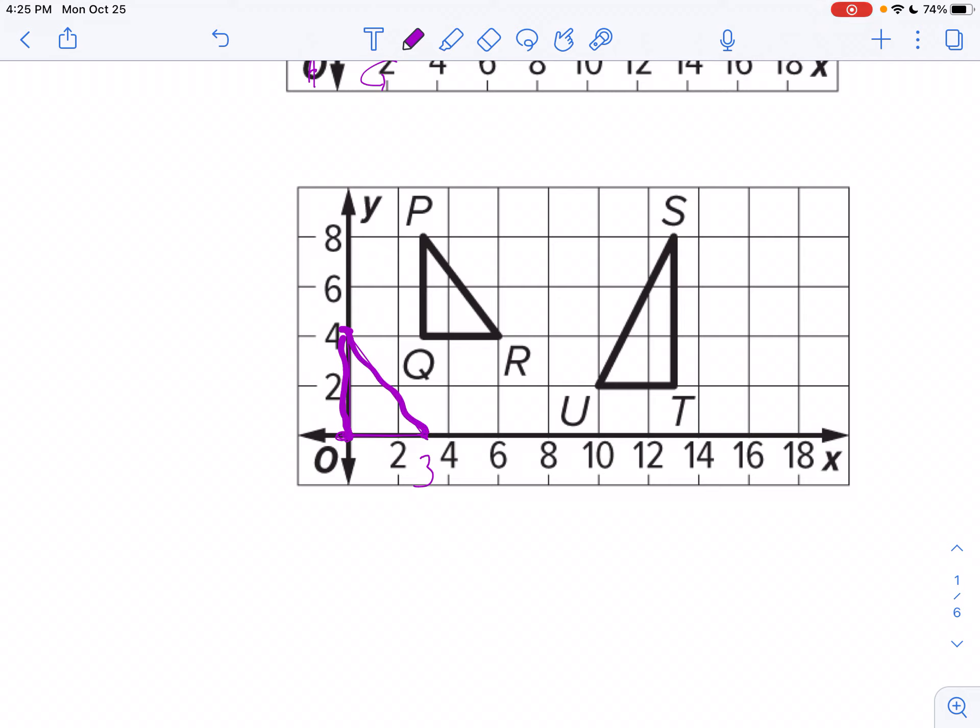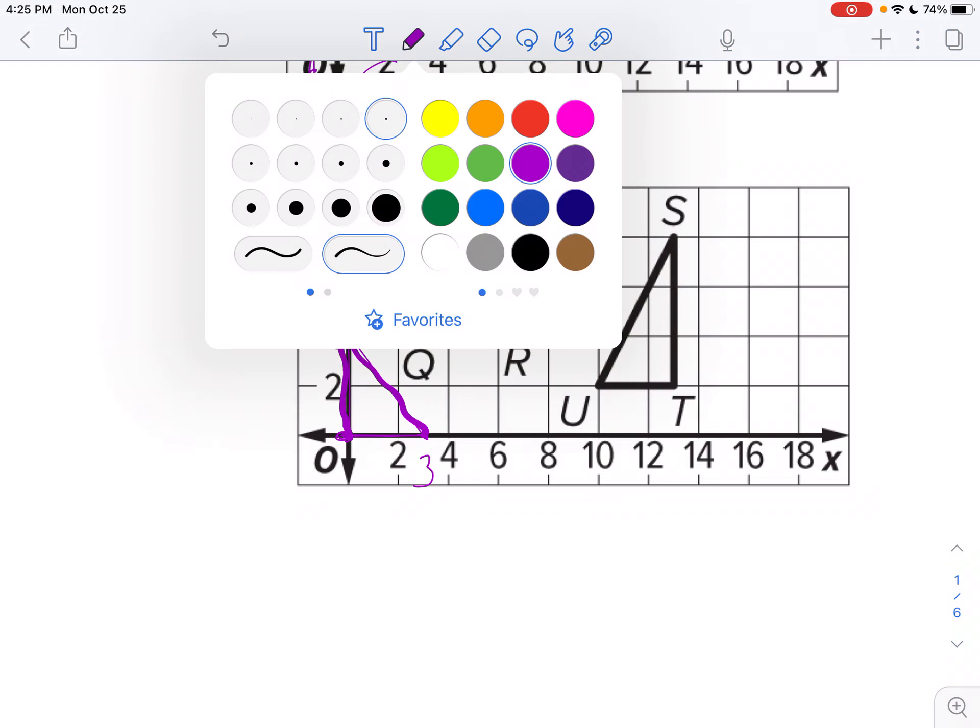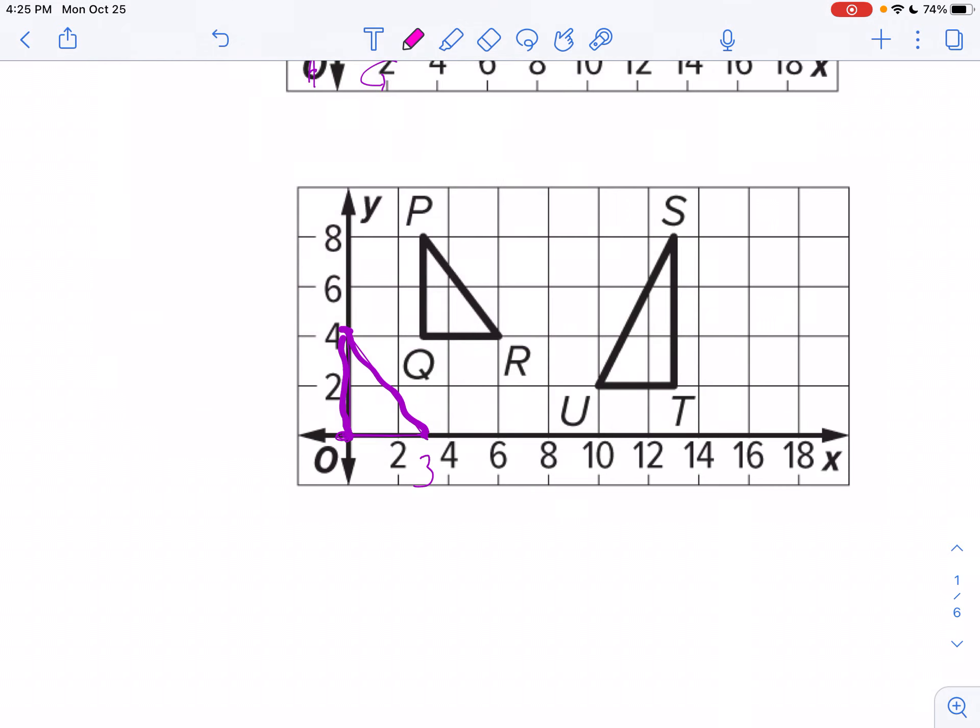Maybe make it a tad bit thicker for you so you can see it a little bit better. Now, I'm going to take t. I'm going to reflect that so t is in the corner.